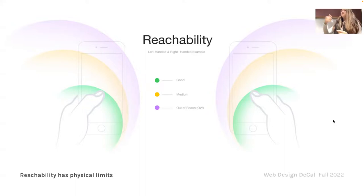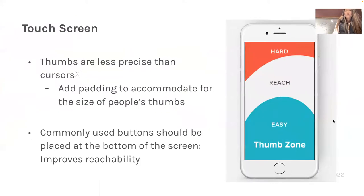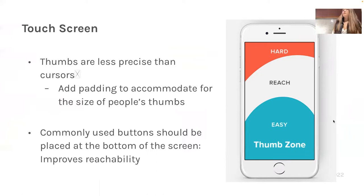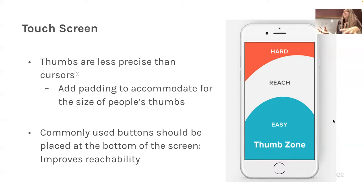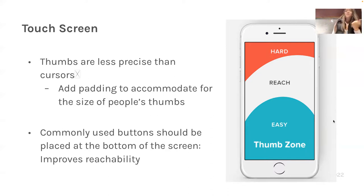Thumbs are a lot less precise than cursors. Aim to put all touchable elements like buttons in the lower reachable zone, and less-important content like text or images higher up. For example, on a retail website the image usually takes up most of the top space and the purchase button is near the bottom, making it accessible for your thumb.